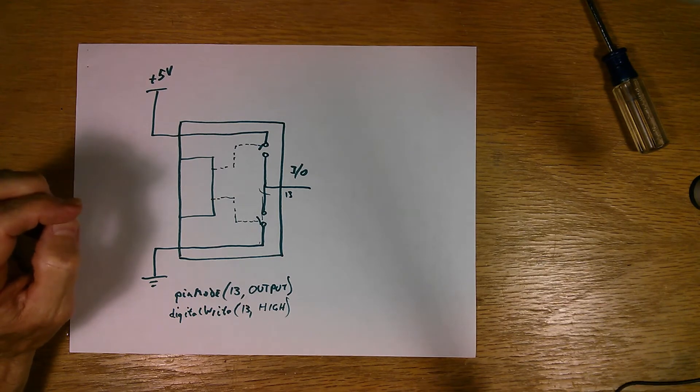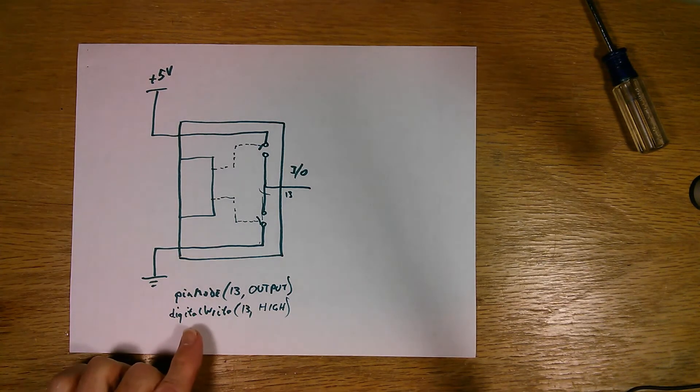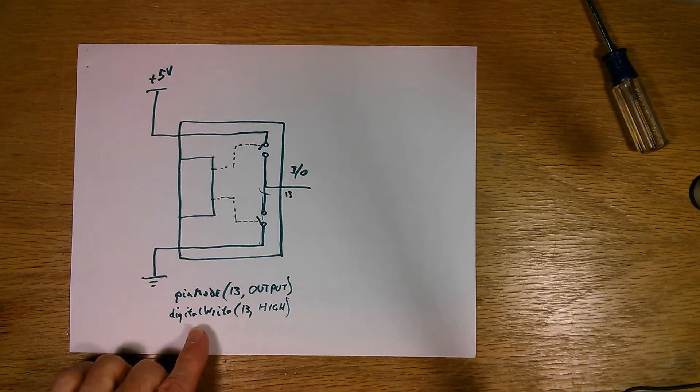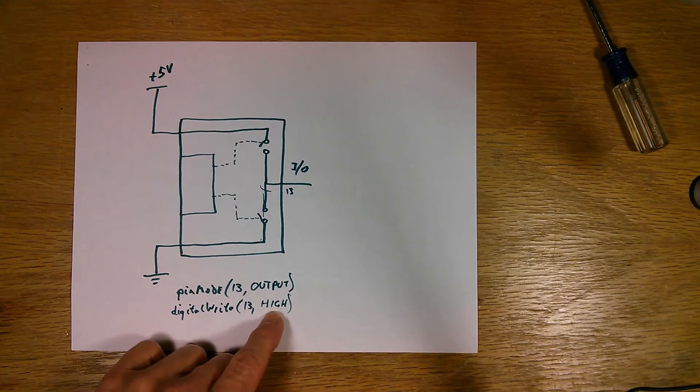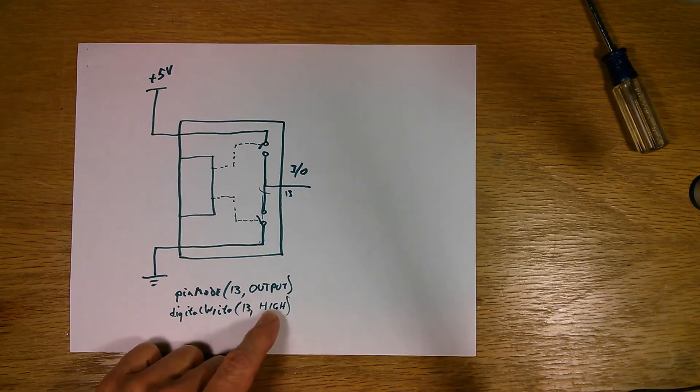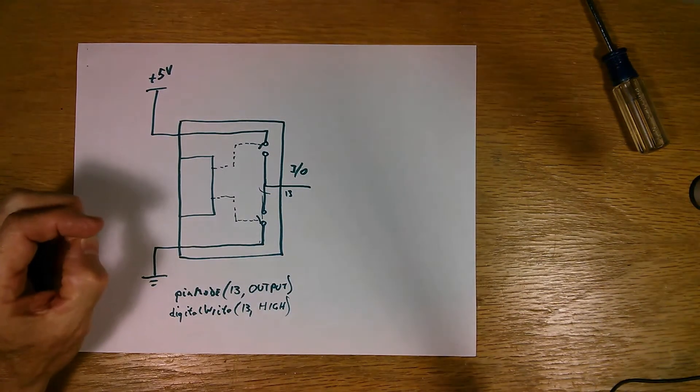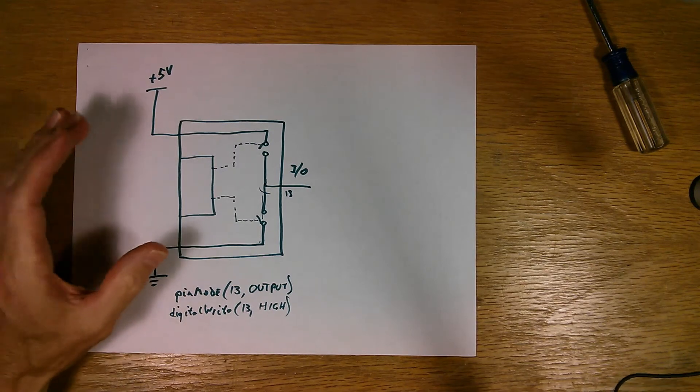The Arduino code for making it go high is the word, the function or the code digital write, pin number again, and what you want it to do. In this case go high, or you could change it to low. That is how you control the I/O pin.